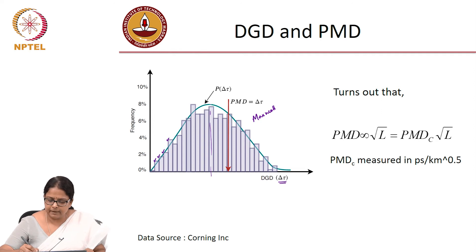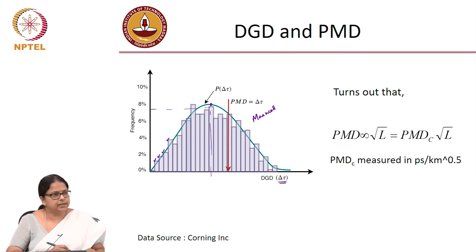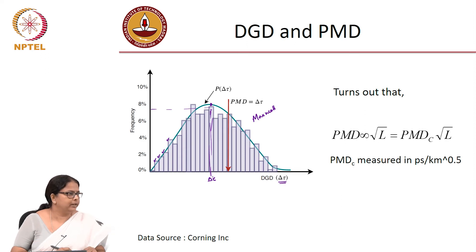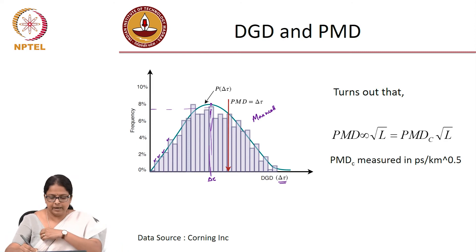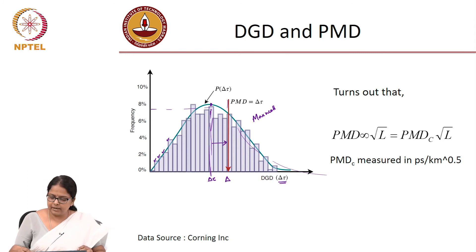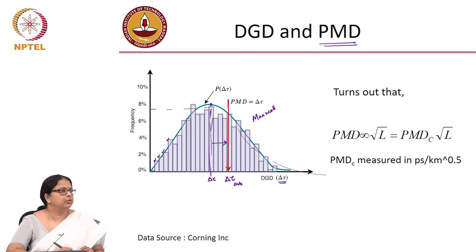For example, if a point on the histogram shows 8 percent, it means there is an 8 percent probability that in this particular cable you have that value of delta tau. This is how PMD is quantified because it is a completely statistical phenomenon. The average of the Maxwell distribution — which has a long tail and is not symmetric — is what we define as polarization mode dispersion.